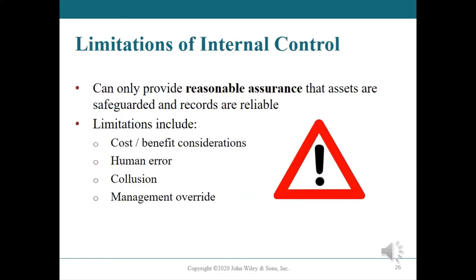Limitations of internal control. No matter how well it is designed or operated, a company's system of internal control can only provide reasonable assurance rather than a guarantee that assets are properly safeguarded and that accounting records are accurate and reliable. This is due to a number of limitations, including: one, cost-benefit considerations; two, human error; three, collusion; and four, management override.